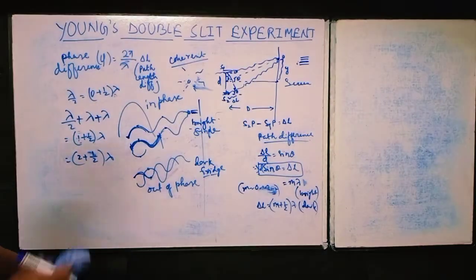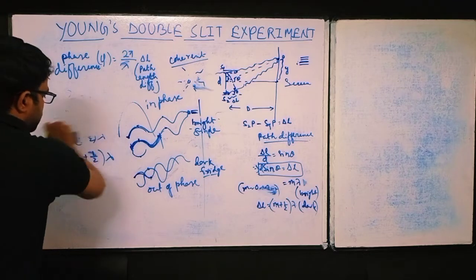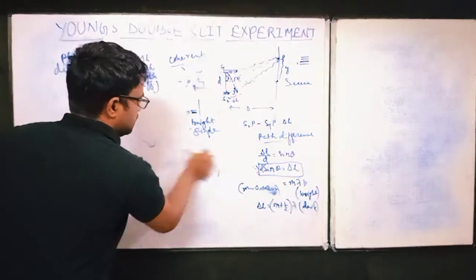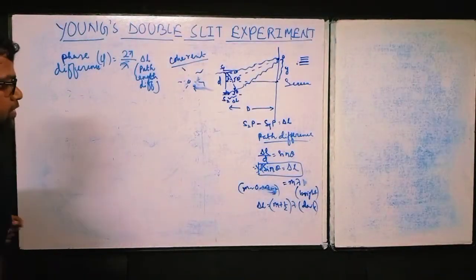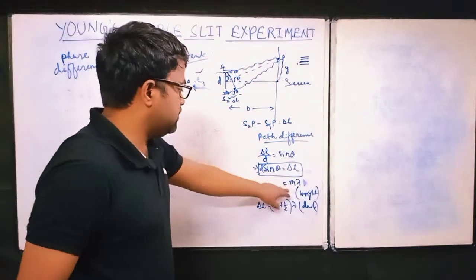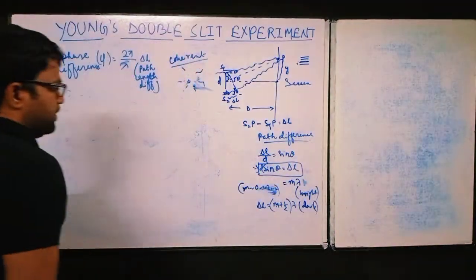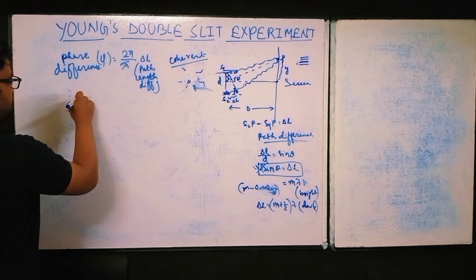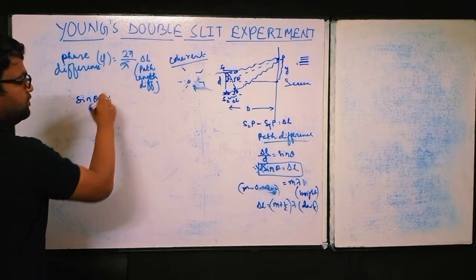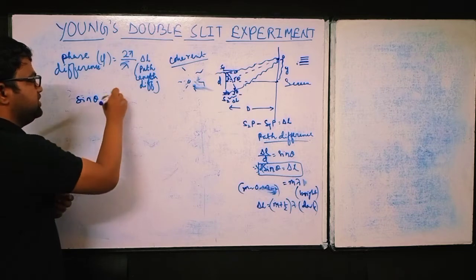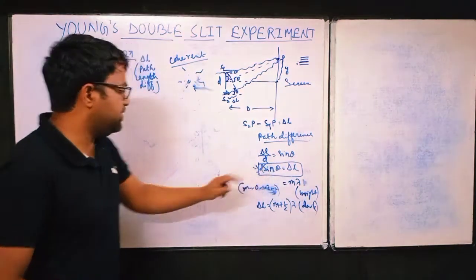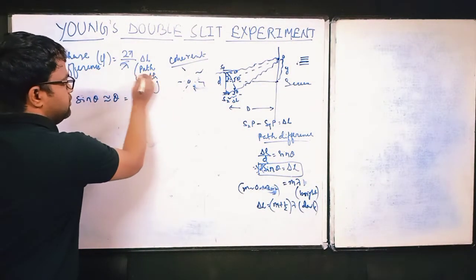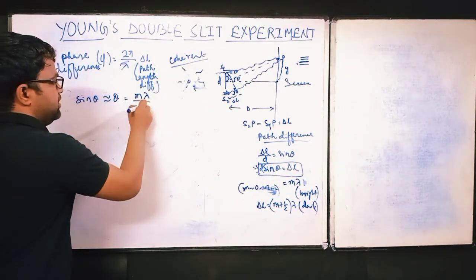Now let us find the formula for fringe width. For small angles, sin theta ≈ tan theta ≈ theta, and we have sin theta = delta L / d. For constructive interference, delta L = m·lambda, so theta = m·lambda / d. For destructive interference, delta L = (m + 1/2)·lambda.